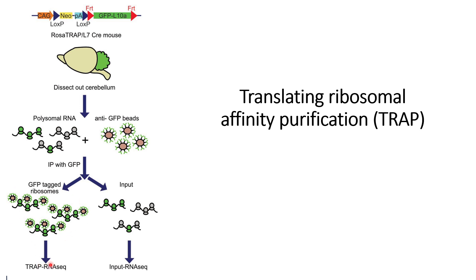The GFP-tagged ribosomes can then be used for RNA sequencing. To compare the RNA sequencing signals, we use a control in which we collect all ribosomes — both GFP-tagged and non-tagged — and compare them with RNA-seq data to find the relative expression, up-regulation, or down-regulation of particular RNAs. In this way, TRAP can be used to identify up- or down-regulation of genes within cells or in transgenic animals.